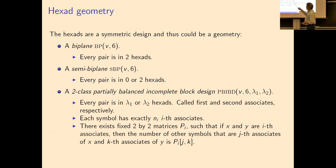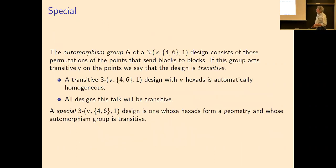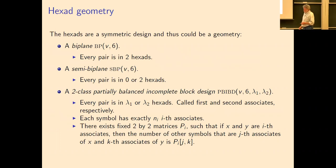But the hexads are a symmetric one design. Since they're a symmetric design, they could be a geometry, they could be a biplane, they could be a symmetric biplane, they could be a two-class partially balanced incomplete block design. So this means that every pair is in lambda one or lambda two hexads. The ones that are lambda one are first associates, the ones that are lambda two are second associates, and so they make an association scheme. I'm going to say one of these designs is special if the automorphism group is transitive and if the hexads form a geometry.